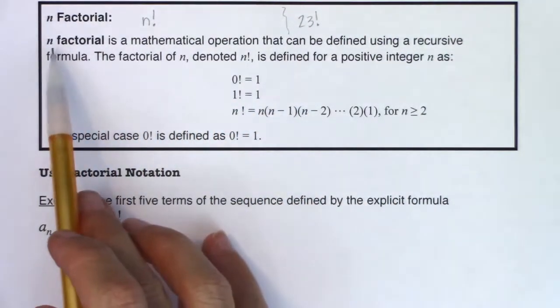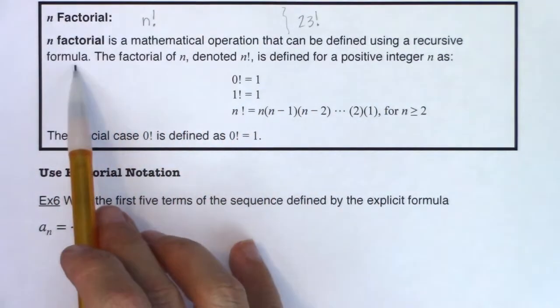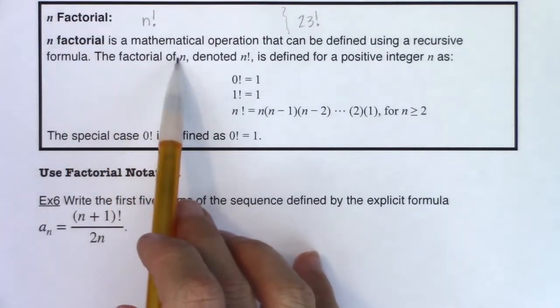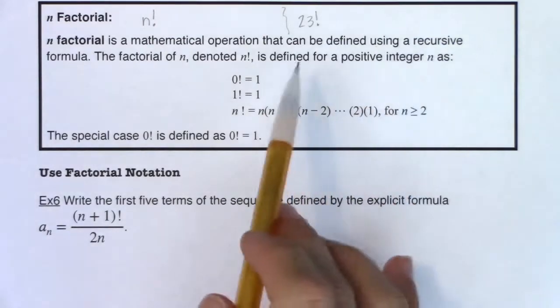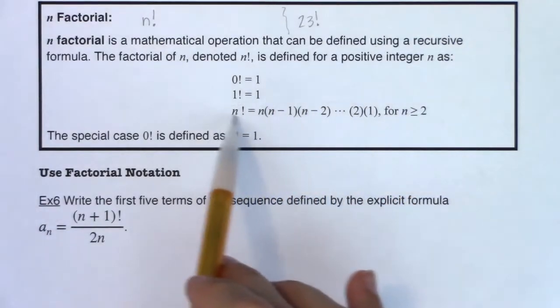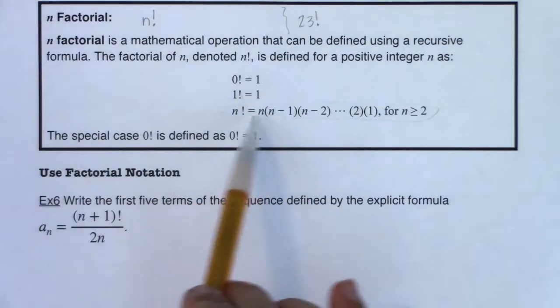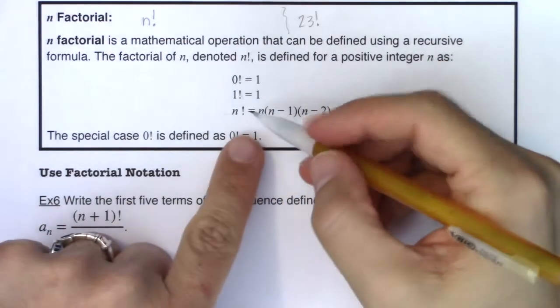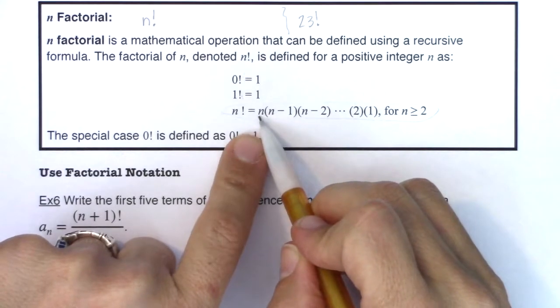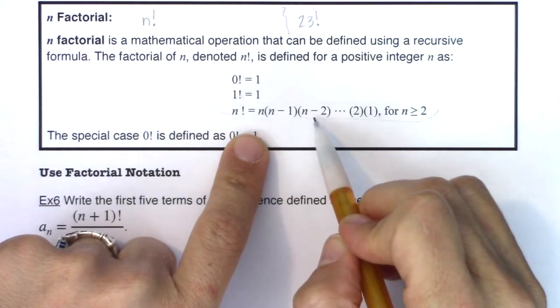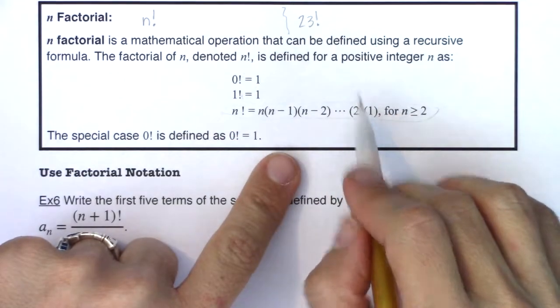And then I did not get it right. I found out, hey, factorials actually mean something. So let me explain what it does mean. So n factorial is a mathematical operation that can be defined using a recursive formula. The factorial of n, denoted by n with an exclamation point, is defined for a positive integer n as - and here's the main definition. These are our starting terms, and then this is really the recursive formula.